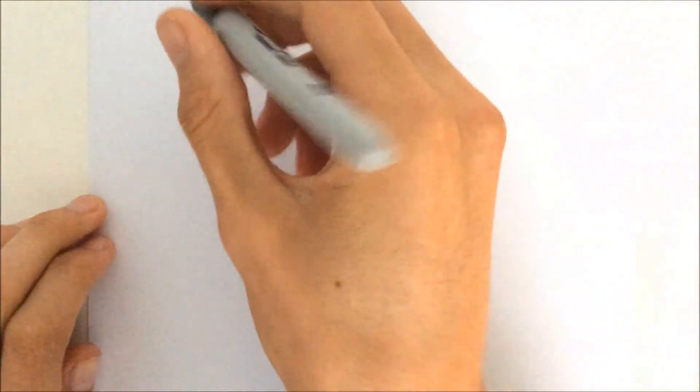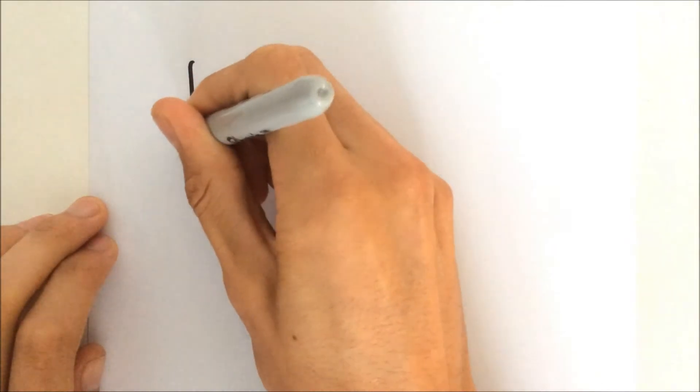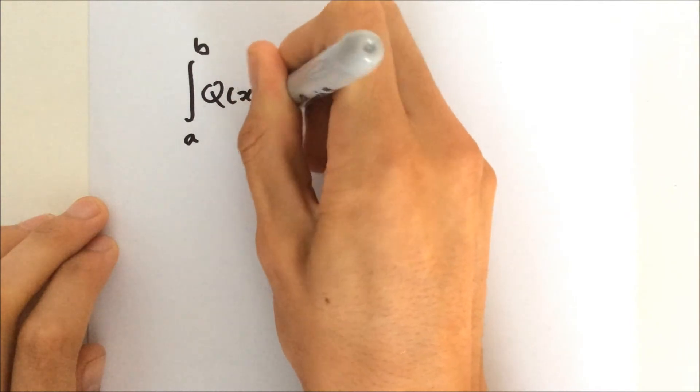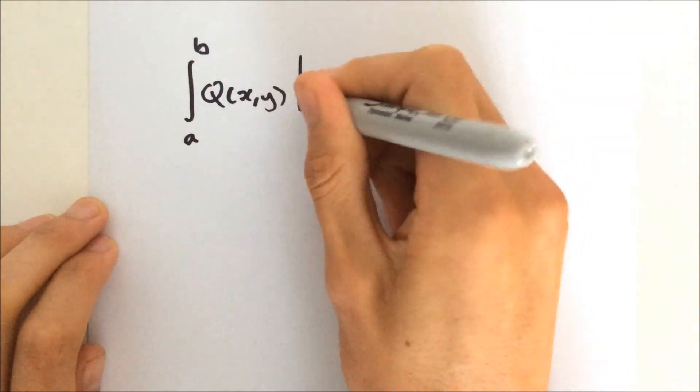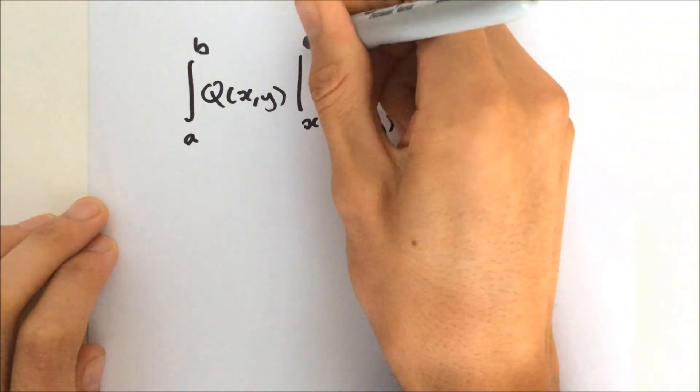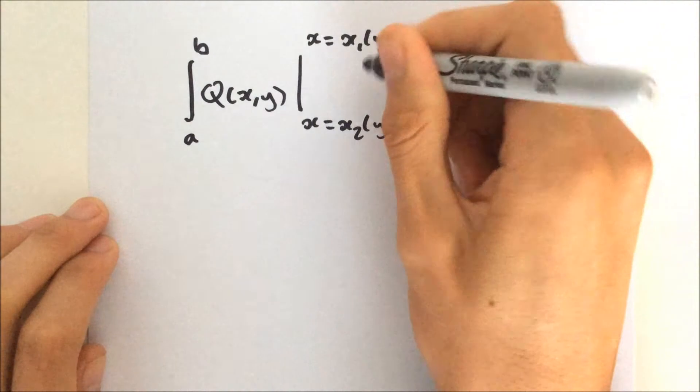So we got the integral from A to B of Q of xy, evaluated at x equals 2 and x equals 1. And that's dy.